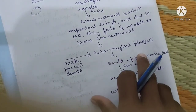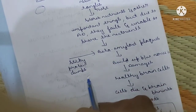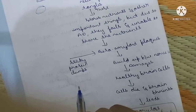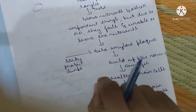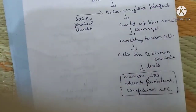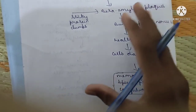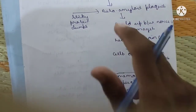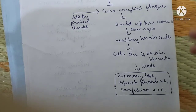Due to the inability to store nutrients, there is deposition of beta-amyloid plaques — sticky protein clumps that build up between nerve cells and damage healthy brain cells. As one cell gets damaged it proliferates damage to other cells, the cells die, and the brain shrinks. This leads to memory loss, speech problems, confusion, and hallucinations.